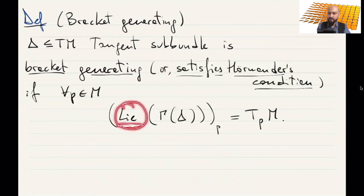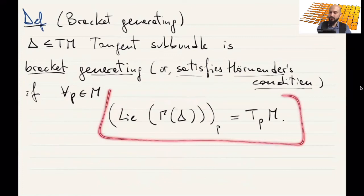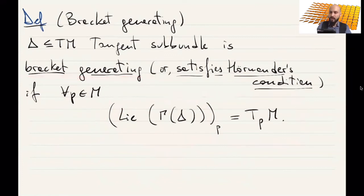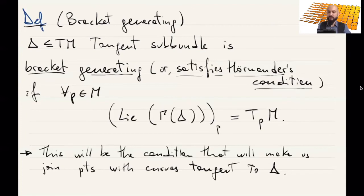Now, this is a collection of vector fields. If you evaluate them at p, then you have the whole tangent space. As you see, we just defined the Lie algebra generated. And also, whenever you have this family F, we defined what is the evaluation at p in the previous slide. So this is a condition we call bracket generating condition.